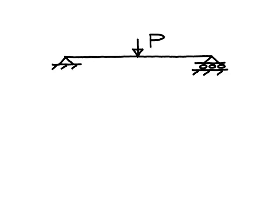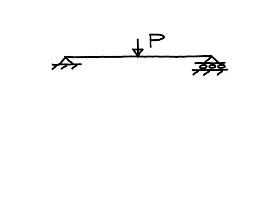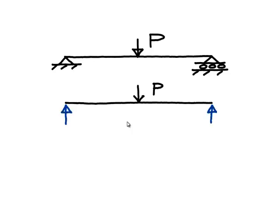So we start with a simply supported beam like this with a load in the middle, and of course we can easily find the reactions. They're simply P upon 2 on the left-hand support and on the right-hand support. But how is the load P carried to these supports? What does the beam feel between the load and the supports?